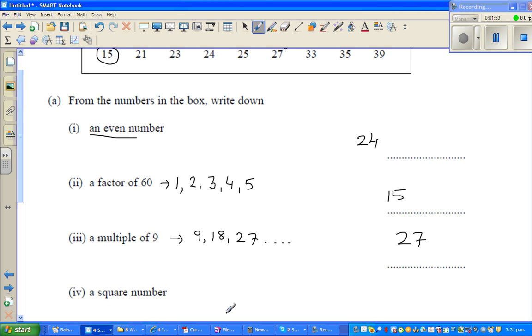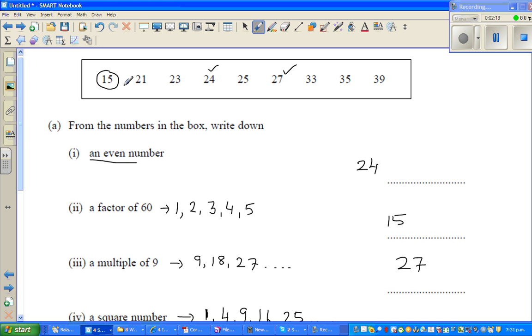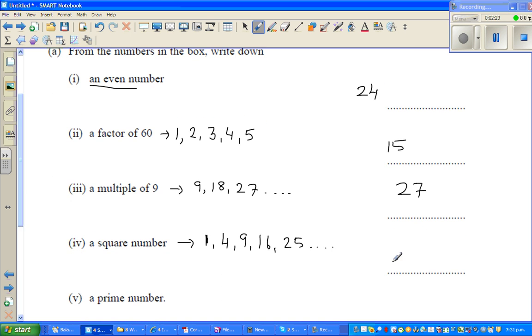A square number - what are the square numbers? Square numbers start from 1. 1 times 1 is 1, 2 times 2 is 4, 3 times 3 is 9, 4 times 4 is 16, and so on - 25. So a perfect square is 25, so you can write 25 is a square number.